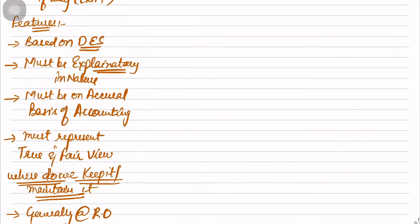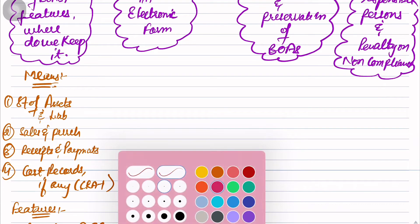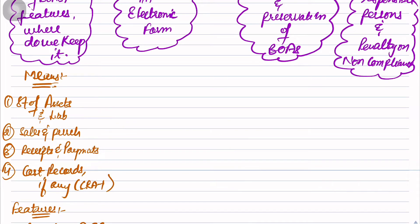Now what is our next part? The next part says: Books of Accounts in electronic form. Nowadays, Information Technology Act 2008 certifies that electronic transfers and electronic books are allowed. So if you want to prepare the Books of Accounts in electronic form, then there are some conditions to be satisfied.